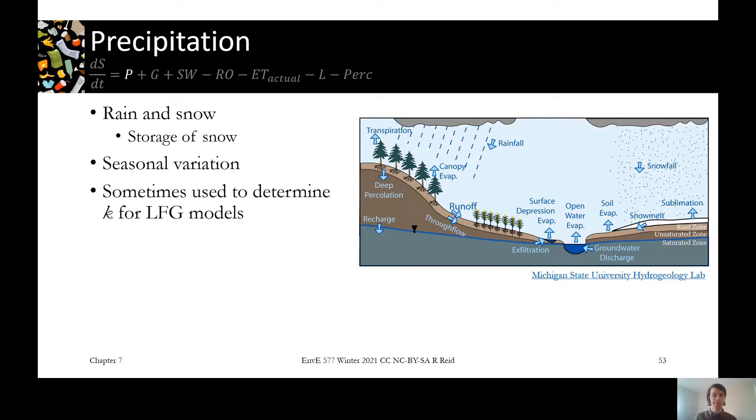But precipitation is really the big driver in this, especially thinking about that secondary leachate being formed in the open cells. That's where most of the precipitation gets into the system.